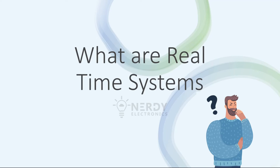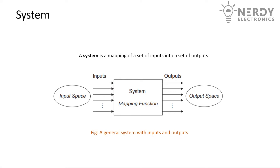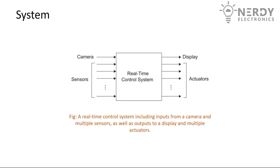In this video let us see what real-time systems are. To understand real-time systems we first need to understand what a system is. A system is nothing but a mapping of a set of inputs into a set of outputs. The system takes the input and maps them to the outputs and generates outputs. An example would be a real-time control system, or your camera — a mobile phone where you have camera and sensors, and then you have a display and various actuators. These are the inputs to the system and these are the outputs.